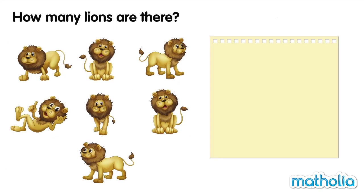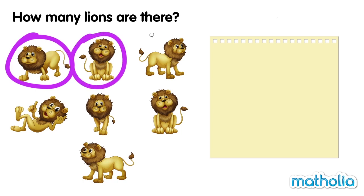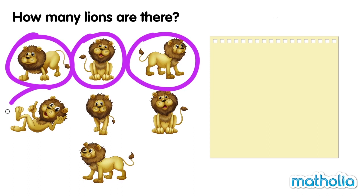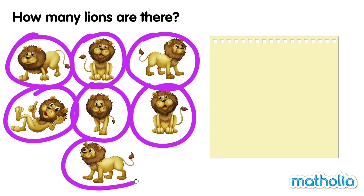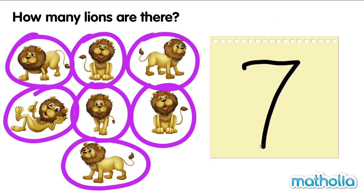How many lions are there? One. Two. Three. Four. Five. Six. Seven. There are seven lions. Seven.